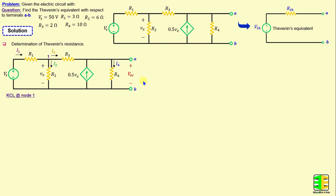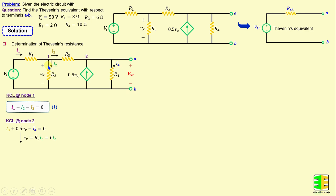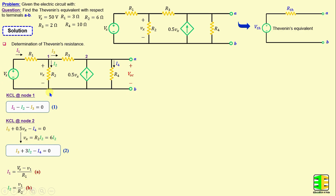By applying Kirchhoff's current law at node 1, we can write: I1 minus I2 minus I3 equals 0. Now by applying Kirchhoff's current law at node 2, we can write: I3 plus 0.5 times Vx minus I4 equals 0. According to Ohm's law, Vx equals R2 times I2 equals 6 times I2. If we replace Vx, we obtain: I3 plus 3 times I2 minus I4 equals 0. According to Ohm's law, I1 equals (Vs minus V1) over R1, I2 equals V1 over R2, I3 equals (V1 minus VOC) over R3, and I4 equals VOC over R4, where V1 is the node voltage at node 1.